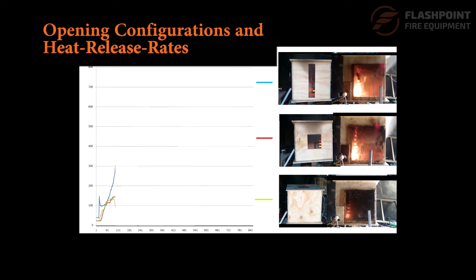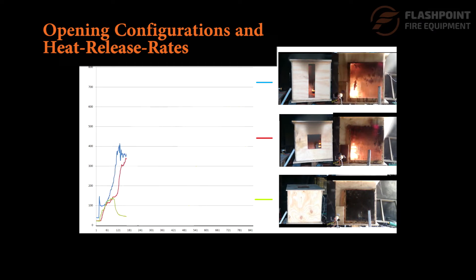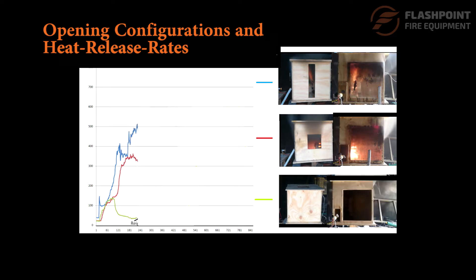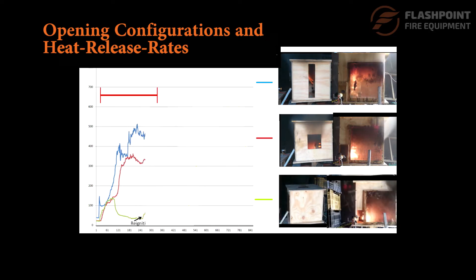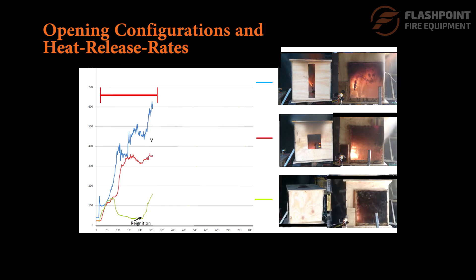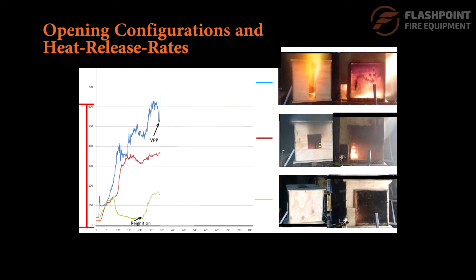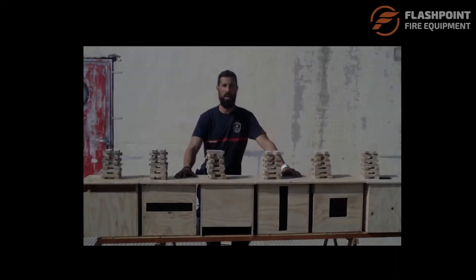Determining the heat release rate of ventilation-limited fires can be approximated if we consider certain mathematical formulas, including but not limited to the area and height of the ventilation opening and the shape and location of those openings in relation to the fire.